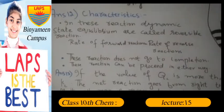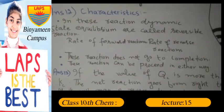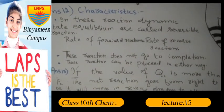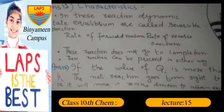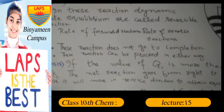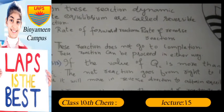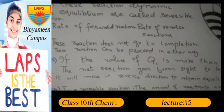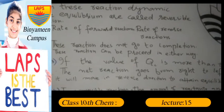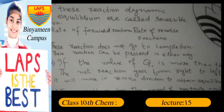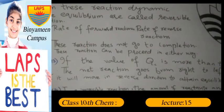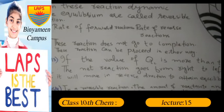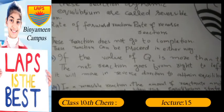Number 1: Characteristics — in these reactions, the dynamic state of equilibrium is called a reversible reaction. Number 2: The rate of forward reaction is equal to the rate of reverse reaction. Number 3: These reactions do not go to completion. Number 4: These reactions can proceed in either direction.